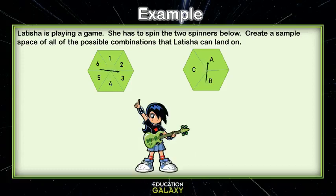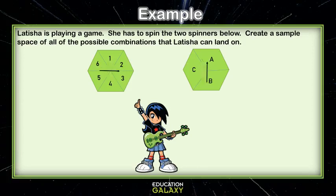Let's look at this example. Leticia is playing a game. She has to spin two spinners below. Create a sample space of all the possible combinations that Leticia can land on. The spinners are making the choice for us — they're deciding what number and what letter they land on.